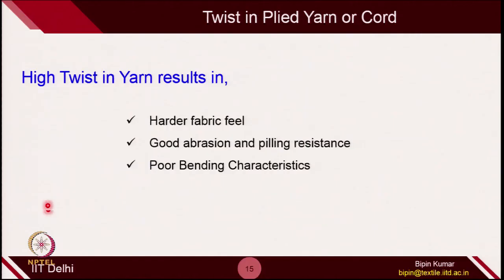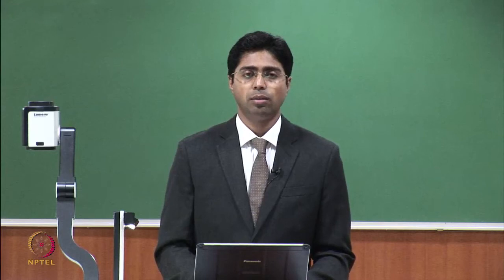Twist is extremely important from a fabric point of view. High twist makes the fabric harder but results in good abrasion and pilling resistance. Unfortunately, it has poor bending characteristics. In knitting, bending of the yarn is the first criterion, because the needle catches the yarn and bends it. If the yarn is extremely stiff, it will not bend properly — there may be needle breakages or problems in loop formation. Therefore, yarn with poor bending characteristics is not recommended for knitting.